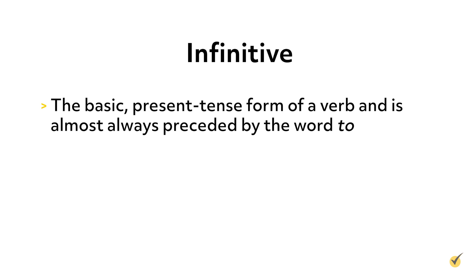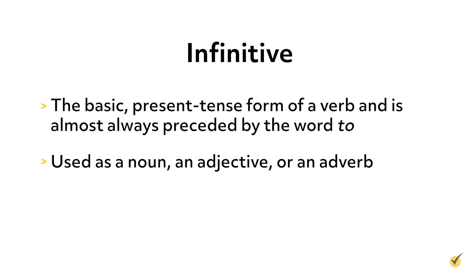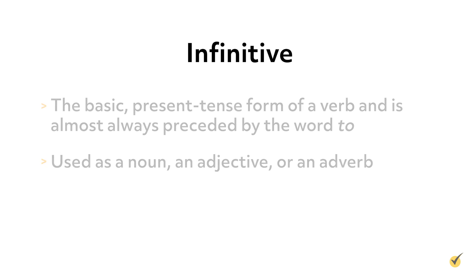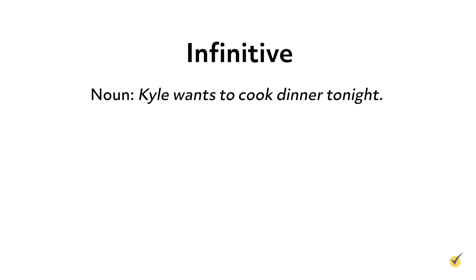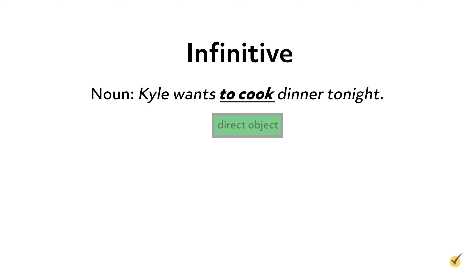Finally, let's take a look at infinitives. An infinitive is the basic present tense form of a verb and is almost always preceded by the word 'to.' Infinitives can be used as a noun, an adjective, or an adverb. Here's an example of an infinitive being used as a noun: 'Kyle wants to cook dinner tonight.' In this case, the infinitive 'to cook' is being used as the direct object, answering the question: what does Kyle want?